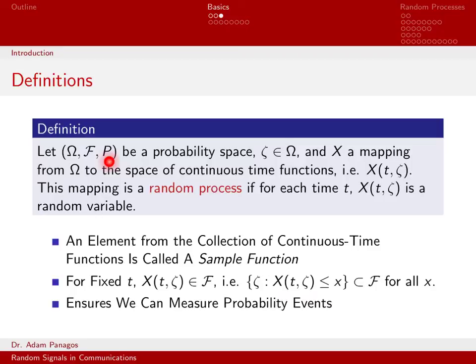So all of this should sound very familiar to what we just did for random sequences. We've now defined what a random process is. It is just a collection of random variables organized by the continuous time parameter t. Now that we have that basic definition done, let's go ahead and define some other quantities related to random processes.